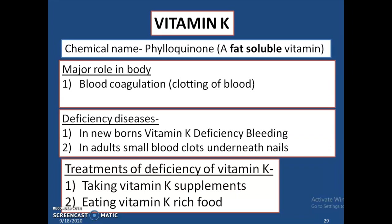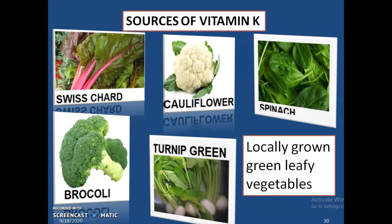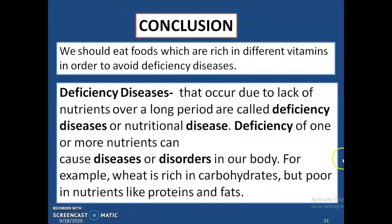Vitamin K is also known as phylloquinone. Its major role in our body is in blood coagulation, or clotting of blood. Its deficiency causes vitamin K deficiency bleeding in infants and, in adults, small blood clots underneath nails. It can be treated by taking vitamin K supplements and eating vitamin K-rich food. Sources of vitamin K include Swiss chard, broccoli, cauliflower, turnip greens, spinach, and locally grown green leafy vegetables.